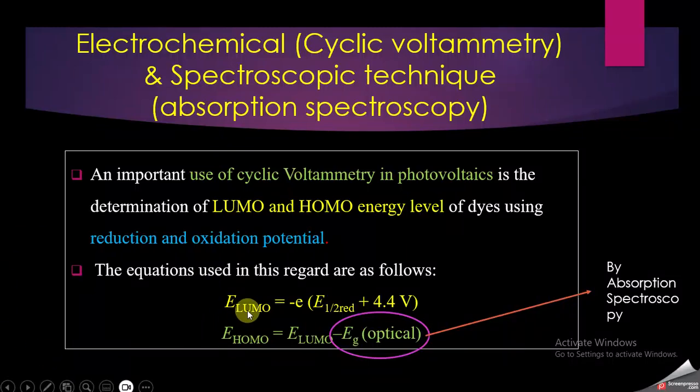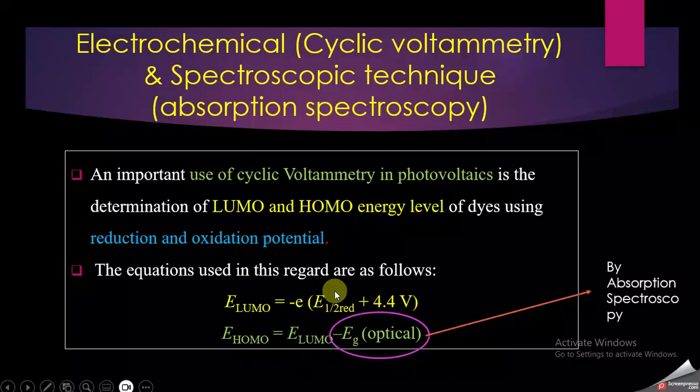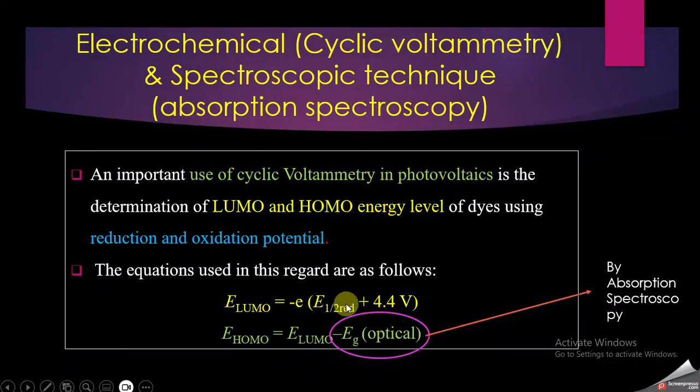We are going to use two formulas. The first formula is for E_LUMO: E_LUMO equals minus e times the half-wave reduction potential plus 4.4 volts. This half-wave reduction potential is found through electrochemical techniques like cyclic voltammetry.